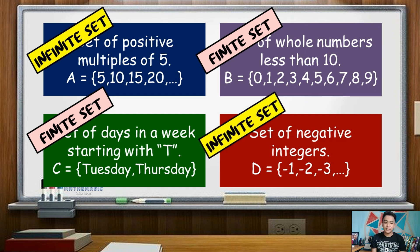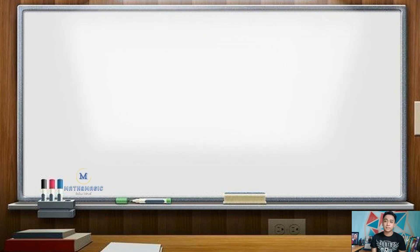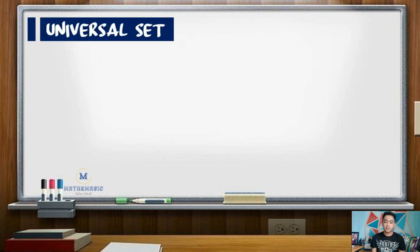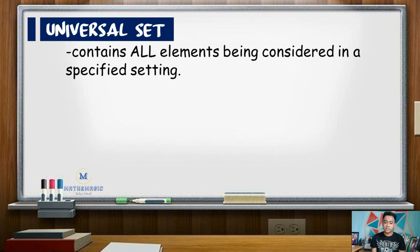After knowing the difference between finite and infinite sets, let us now proceed to the next two types, the universal and null sets. The set that contains all elements being considered in a specified setting is called the universal set. It is commonly denoted by the symbol U.